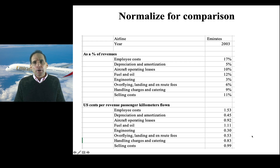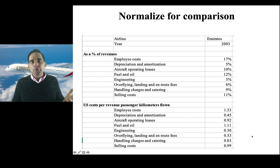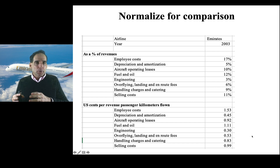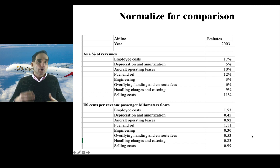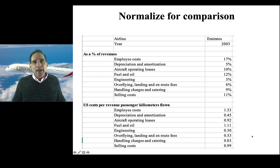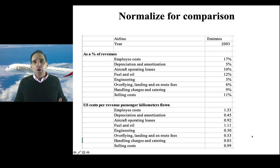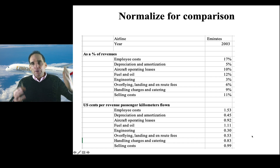The second thing you want to do is normalize those costs for comparison. Just seeing a number — 177 million for employees, for instance — in isolation doesn't tell you much. You'll want to compare a company's operating cost drivers to its competitors, but to do that you have to control for how big they are, how big their revenues are, how many airplanes they have. There are several ways to do that, but probably the two most common are: first, to express the costs as a percentage of revenue — a simple calculation where you divide the operating cost line item by overall revenues.